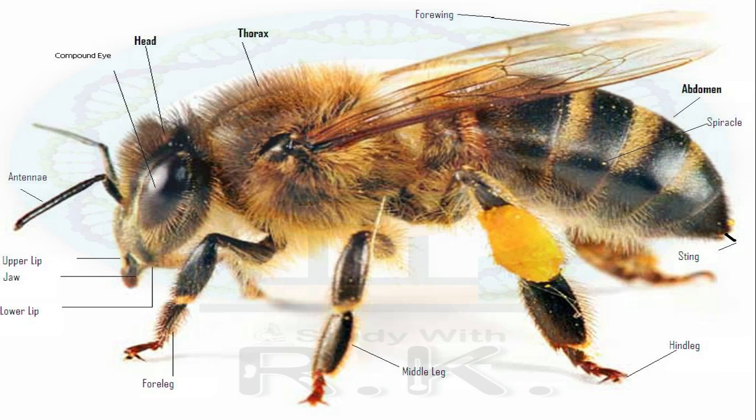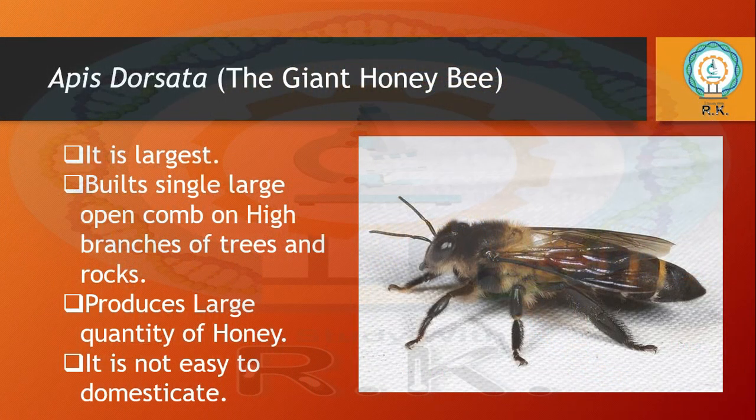The basic morphology of honey bee includes: compound eye, head, thorax, four wings, abdominal region, spiracle, and sting from where the honey bee stings. There are also hind legs, middle leg, fore leg, jaw, upper lip, lower lip, and antennae.